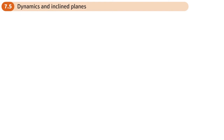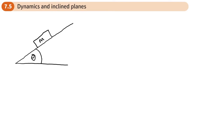We now move on to dynamics in inclined planes — the fifth section in the applications of forces chapter. A few tips for doing these types of questions: typically we have some sort of mass on an incline. You'll have a normal reaction, and depending on the way it's moving — say sliding down — you'd have a frictional force of μR acting up the slope. If it was moving or accelerating up the slope, the frictional force would act downward.